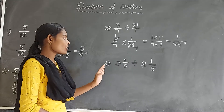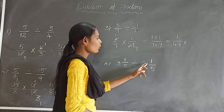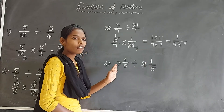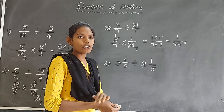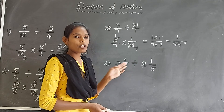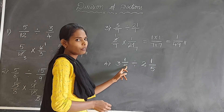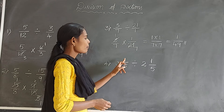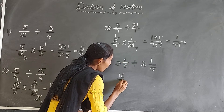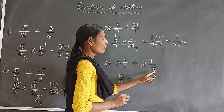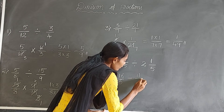Now let's see the last example. Here we have 3 and 1 by 5 divided by 2 and 1 by 5. We have two mixed fractions, so we convert them into improper fractions. 3 into 5 is 15, plus 1 is 16, so the first fraction is 16 by 5. 2 fives are 10, plus 1 is 11, so the second fraction is 11 by 5.